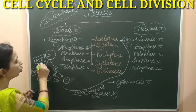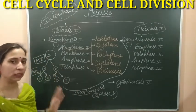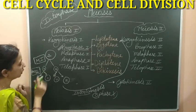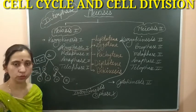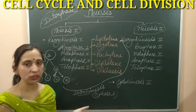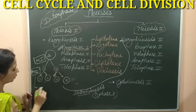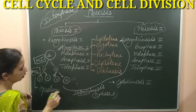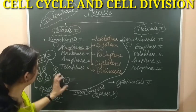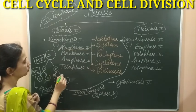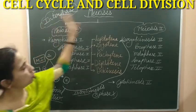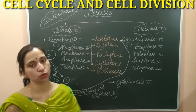In meiosis 1 the chromosome number is reduced, that's why meiosis 1 is known as reductional division. But in meiosis 2, there is no change in the number of chromosomes — haploid cells are formed from haploid parent cells, and no chromosome number is changed. That's why meiosis 2 is known as equational division, similar to mitosis. So just like mitosis, meiosis 2 is an equational division where the same number of chromosomes are passed to the daughter cells.